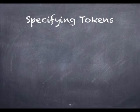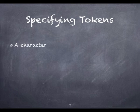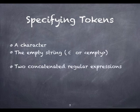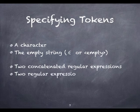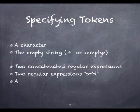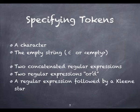To specify tokens, we use the notation of regular expressions. A regular expression is one of the following: a character, the empty string, two regular expressions next to each other (meaning any string generated by the first concatenated with any string generated by the second), two regular expressions separated by a vertical bar (meaning any string from the first or the second), or a regular expression followed by a clean star, meaning the concatenation of zero or more strings generated by the expression in front of the star. Parentheses are used to avoid ambiguity about where the various sub-expressions start and end.